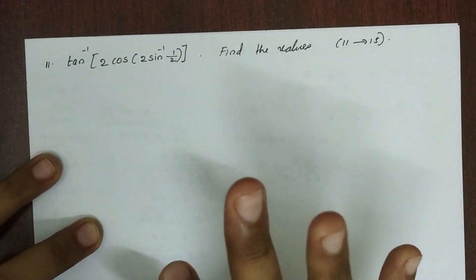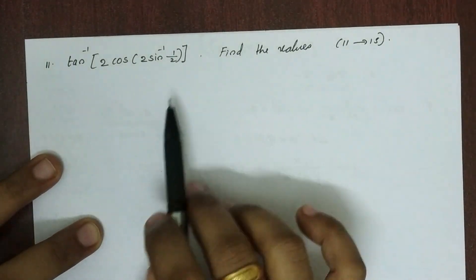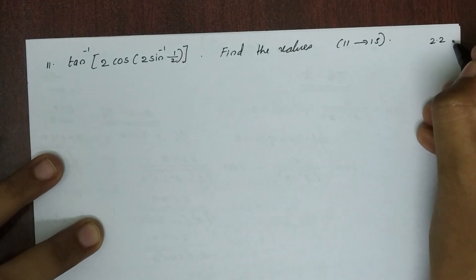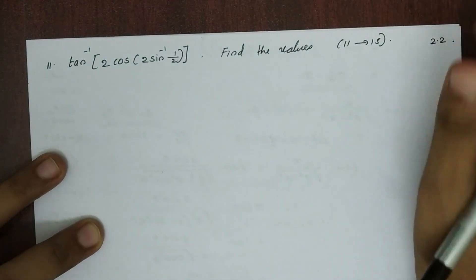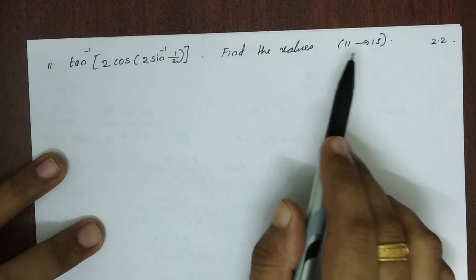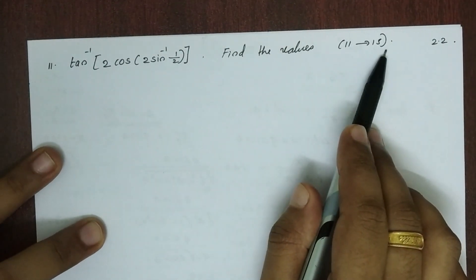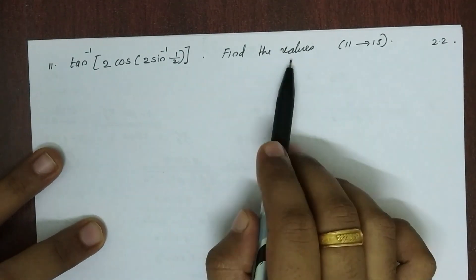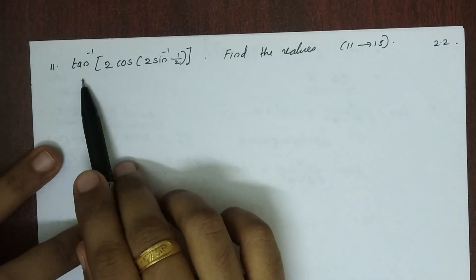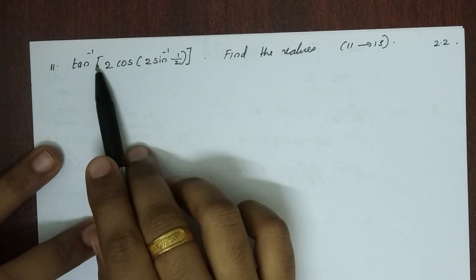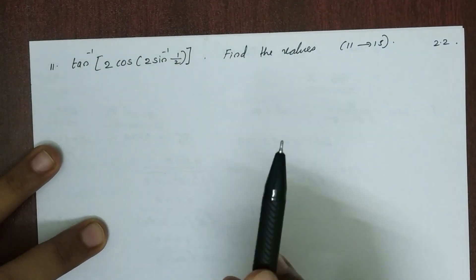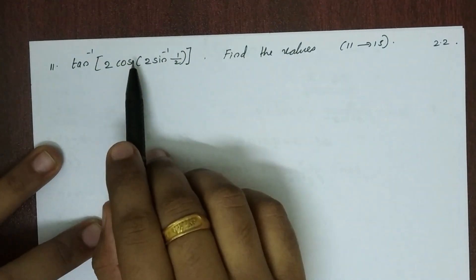Hi everyone. Exercise 2.2, this is the 10th problem. Find the values. The question is: tan inverse of 2 cos of 2 sin inverse 1 by 2. We will solve it.